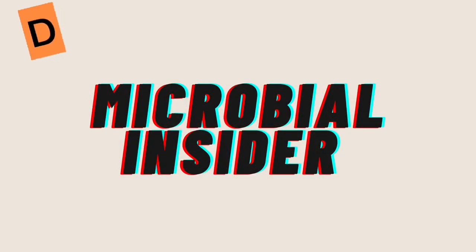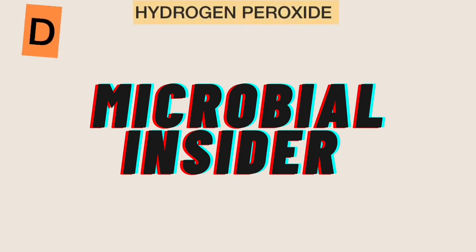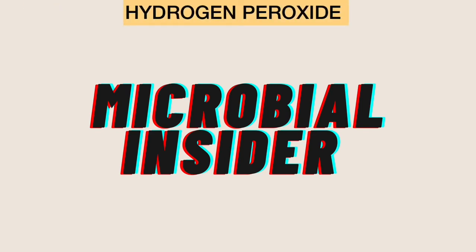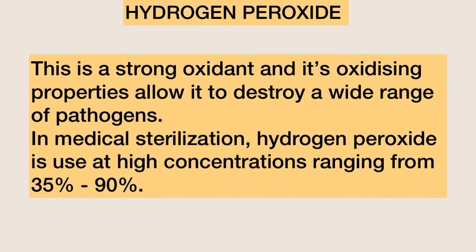Lastly, we have hydrogen peroxide. This is a strong oxidant, and its oxidizing properties allow it to destroy a wide range of pathogens. In medical sterilization, hydrogen peroxide is used at high concentrations ranging from 35% to 90%.